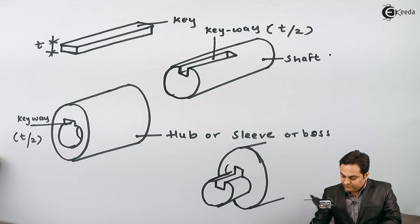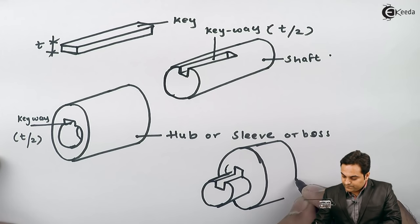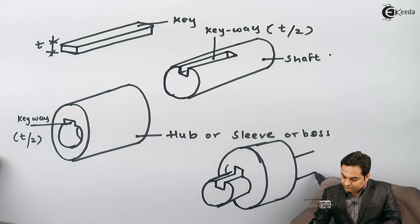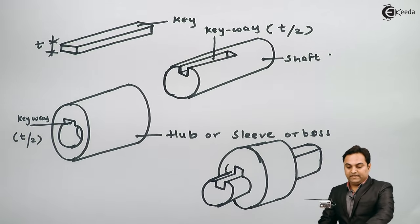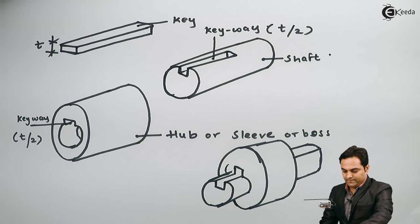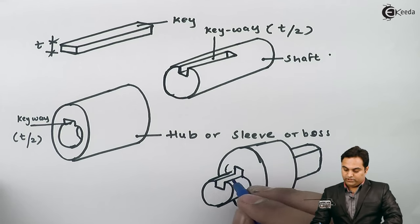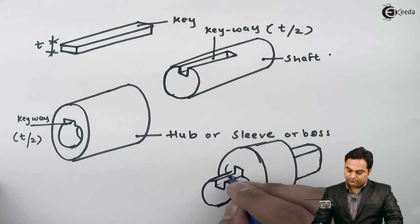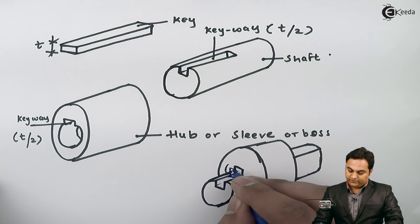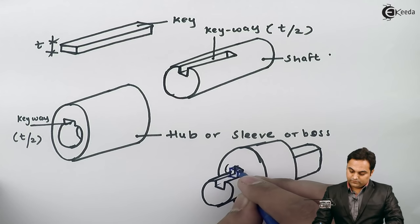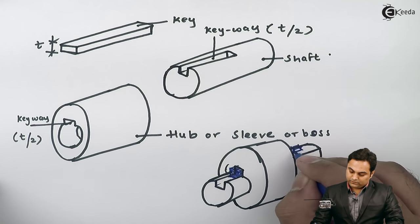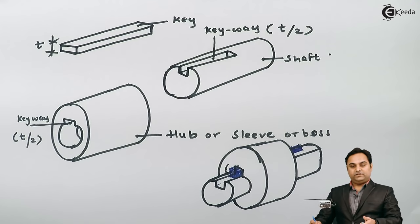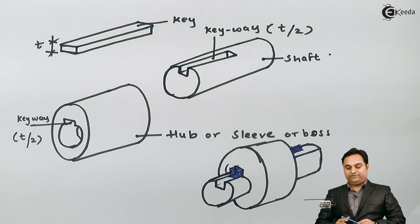Here we have the sleeve or boss, and we have inserted the shaft inside it. The key is inserted in the keyway groove between them. When the key is inserted, we complete this temporary joint, and after the function is over we can remove this key as well. So this was regarding the functioning of the key.